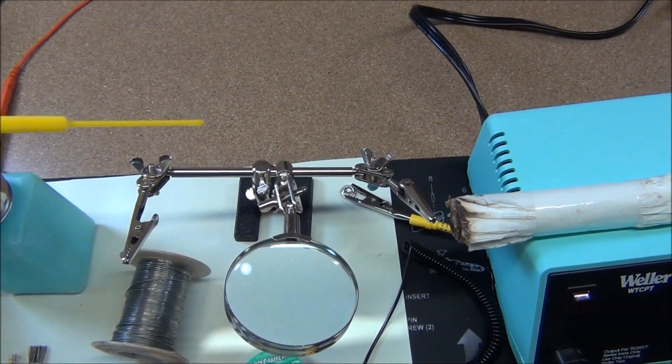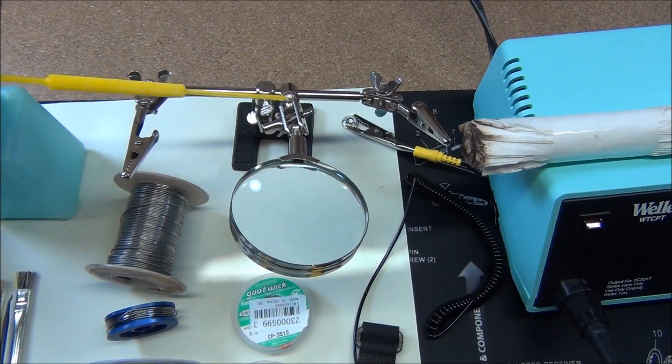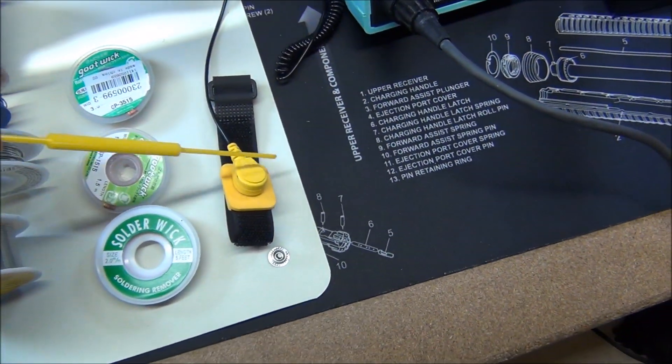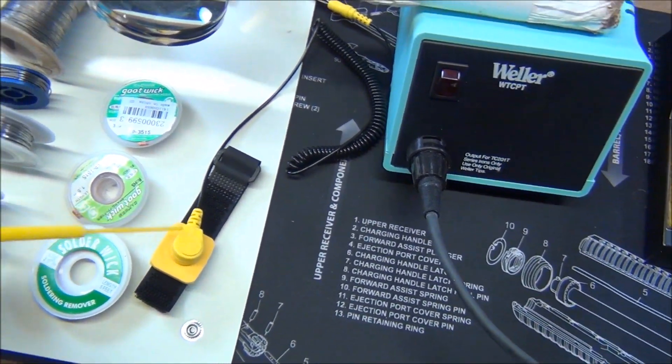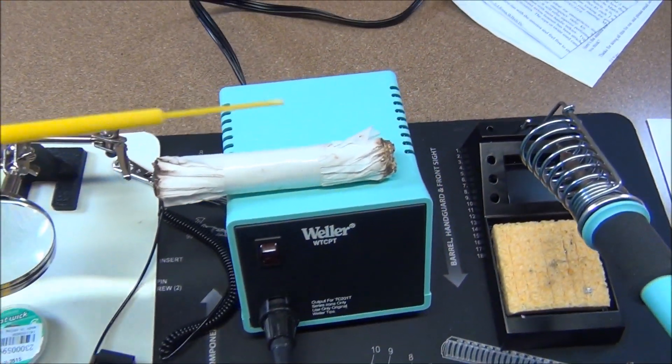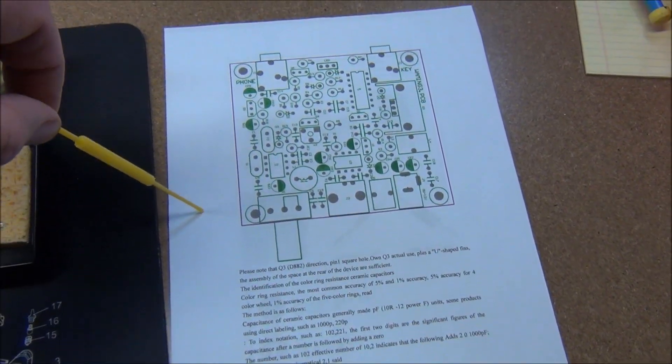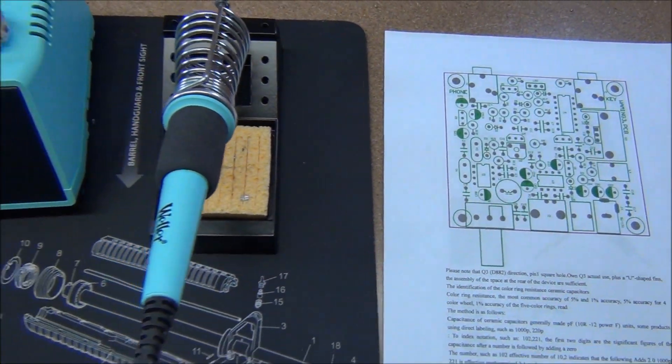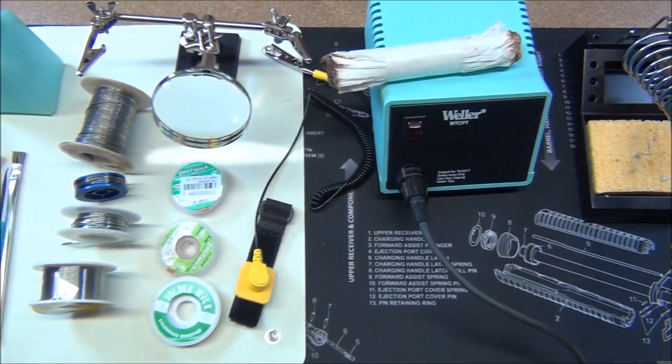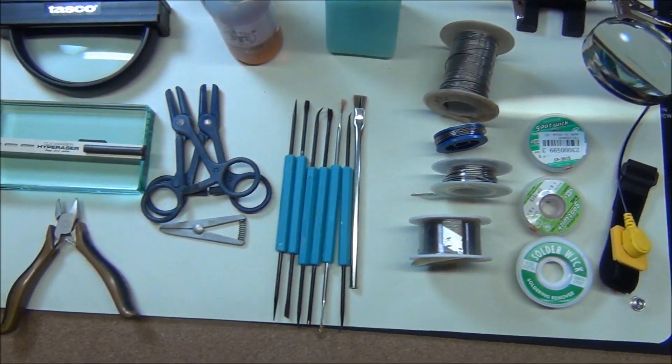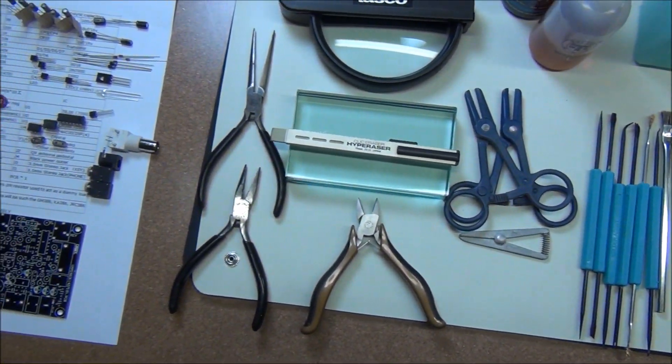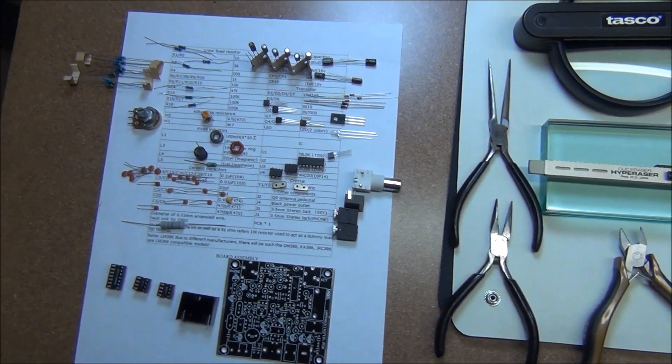I've got my helping hands here, the wrist strap for anti-static protection, a good soldering iron, and the instructions. This is everything I'll be using to build this little QRP kit.